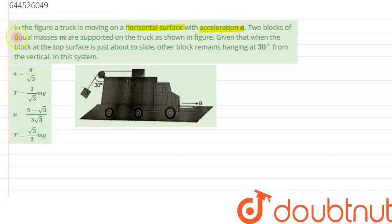Two blocks of equal masses M are supported on the truck as shown in the figure. Given that when the block at the top surface is just about to slide, the other block remains hanging at 30 degrees from the vertical.